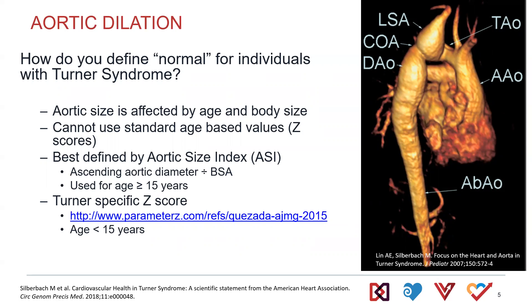In adults or those greater than 15 years of age, we typically index to body surface area for the aortic size index. For those less than 15 years of age, we use a specific Turner syndrome Z-score calculator — the website is shown on screen. You can just plug in height, weight, and aortic size, and it outputs Turner-specific Z-scores for those smaller kids.